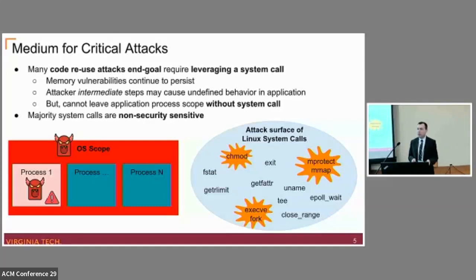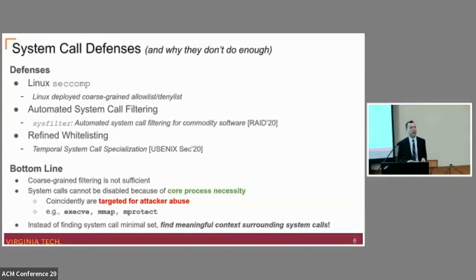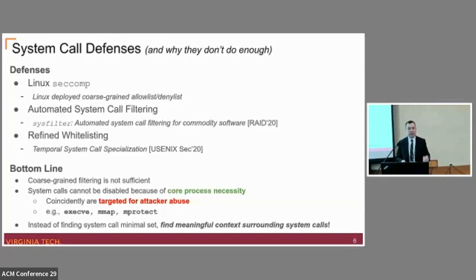Note that while there are over 350 system calls available in Linux, only a handful are commonly sought after by attackers. In terms of what exists to defend against system call abuse, Linux Secure Computing is a coarse-grained, deployed, allow-list/deny-list mechanism that forces the developer to manually derive and specify which system calls are allowed or not allowed during execution. Other literature is basically trying to streamline and make this process easier for developers to leverage Seccomp.